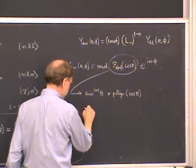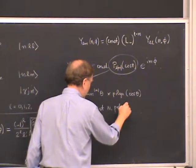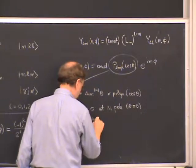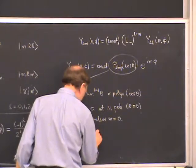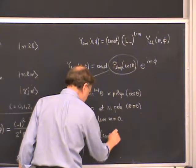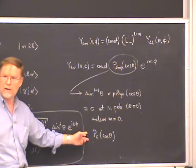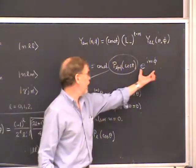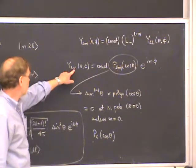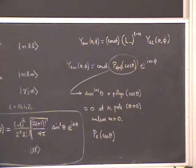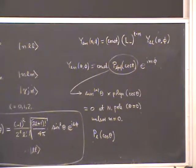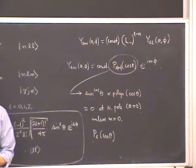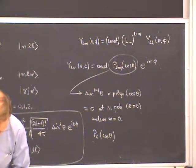This shows that Y_LM equals zero at the north pole where theta = 0, unless M equals zero. The special case M = 0 is given a separate name: P_L without any M index — the ordinary Legendre polynomials. In this case they genuinely are polynomials and e^(iM*phi) becomes one. So for M = 0, the Y_LM is proportional to the Legendre polynomials. Those are the basic facts about the Y_LMs; in general in quantum mechanics it's easier to work with raising and lowering operators than with the wave functions directly.